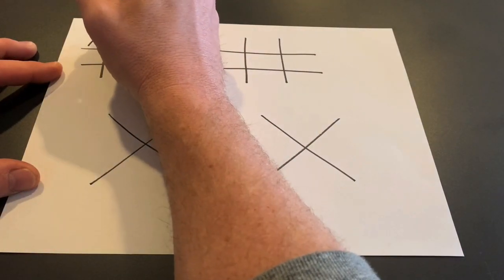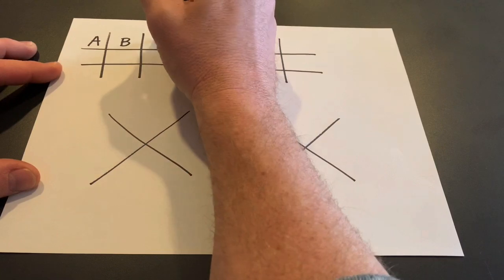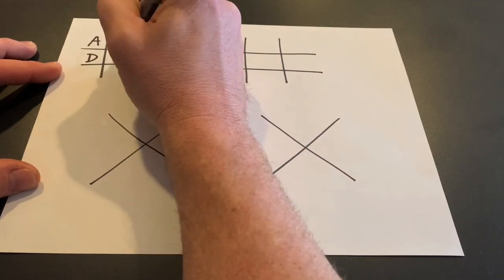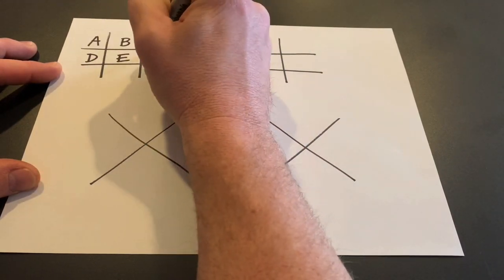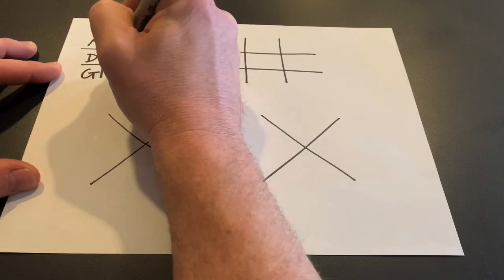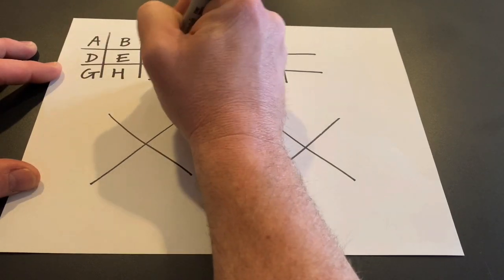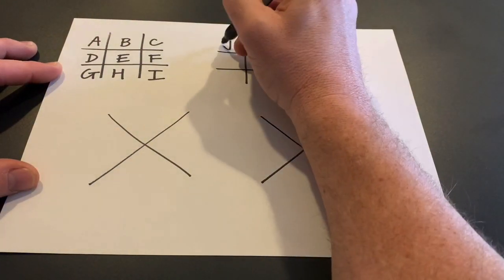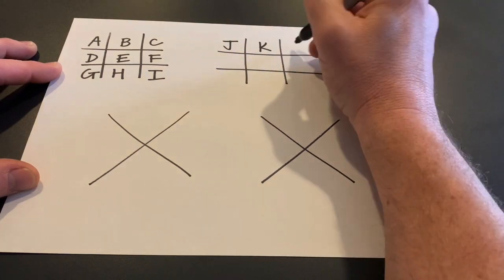You list A through Z in every negative space. The first grid you can see I'm doing A, B, C, D, E, F, G, H, I. The second one J, K, L, M, N, O, P, Q, R.